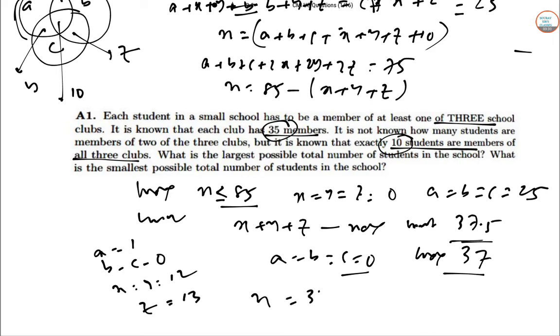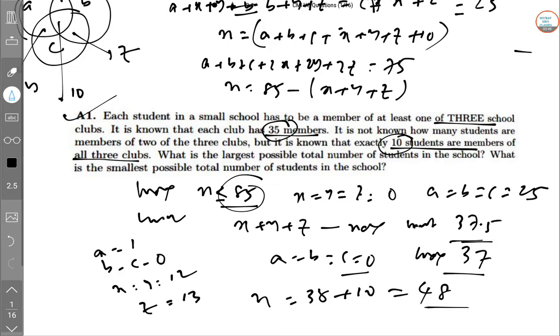So that gives minimum 38 here and plus 10, so 48. So the minimum value is 48. Maximum value is 85. So the first one is done successfully. Let's go to the next one.